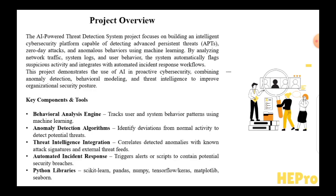The AI-Powered Threat Detection System aims to develop an intelligent cybersecurity solution that uses machine learning to detect advanced threats such as APTs, zero-day attacks, and abnormal network behavior. It analyzes network logs, traffic, and user patterns to identify anomalies and initiate automated incident responses. The system integrates behavioral analytics, anomaly detection, and threat intelligence. Key tools include scikit-learn, pandas, NumPy, TensorFlow, matplotlib, and C bond for data analysis, visualization, and model development.